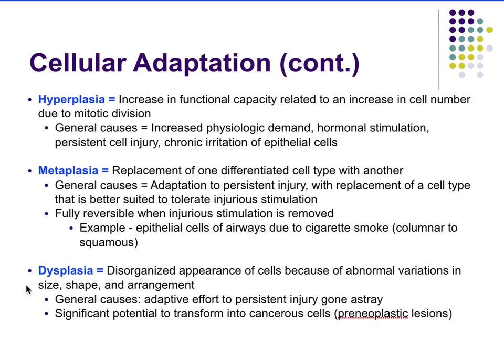Dysplasia is the disorganized appearance of cells due to abnormal variations in size, shape, and arrangement. It's generally an adaptive effort to persistent injury that has gone astray. These cells have significant potential to transform into cancerous cells since they're already abnormal.